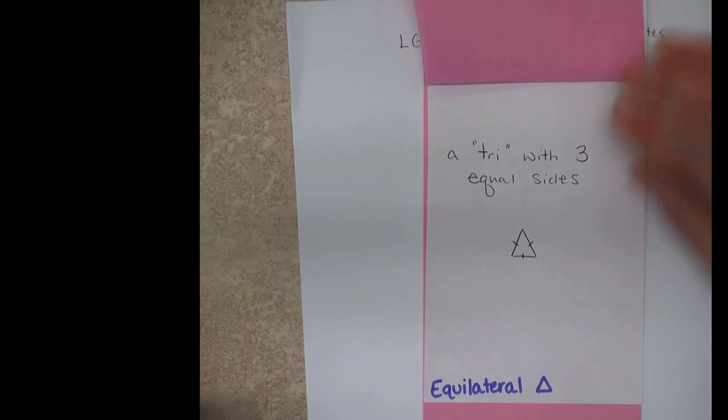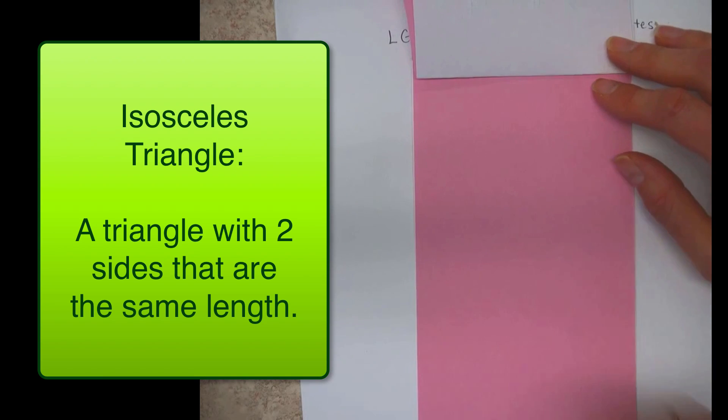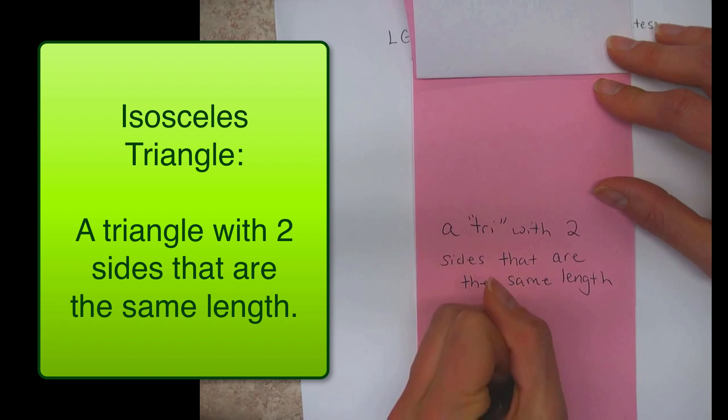The next one is an isosceles triangle, sort of a fun one to say. Which is a triangle with two sides that are the same length. I'm thinking of, like, a right angle again. Like, these two could be perfectly equal, and then you just connect them that way. That might be an easy way to make an isosceles.